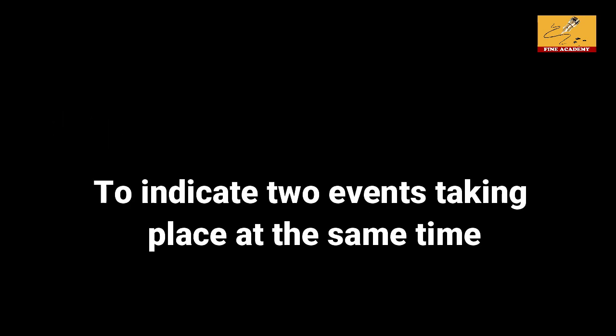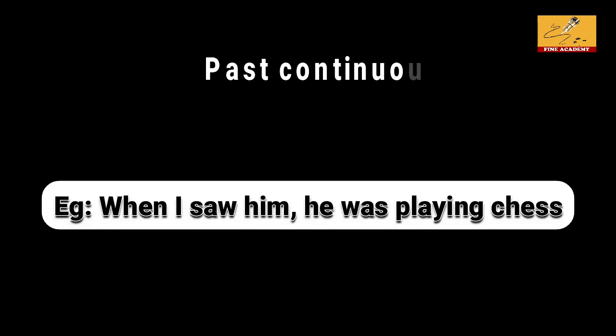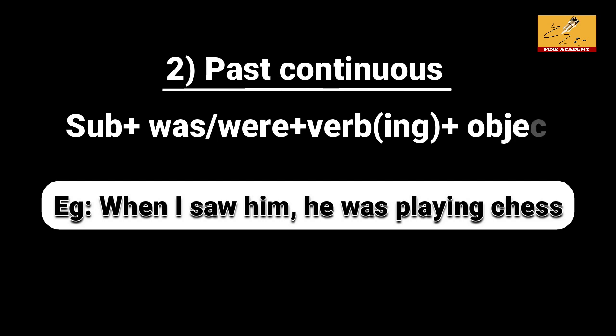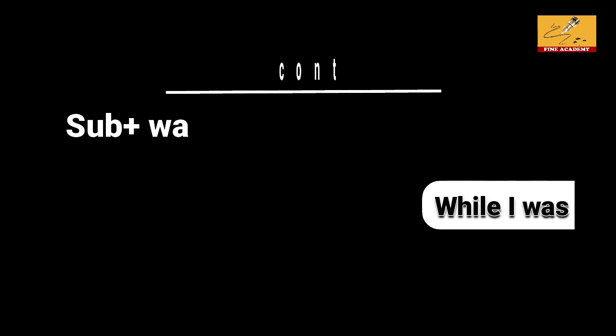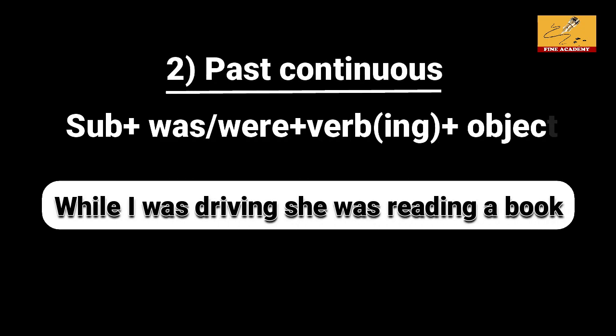How do we use past continuous? When one action was in progress when another event occurred. For example: 'When I saw him, he was playing chess.' Also: 'While I was driving, she was reading a novel.' Past continuous uses was/were with the ing form of the verb.